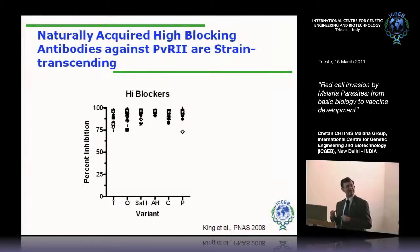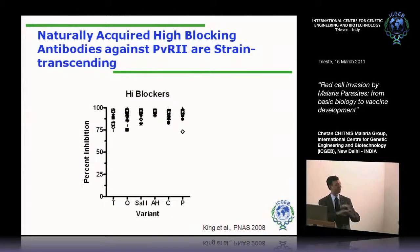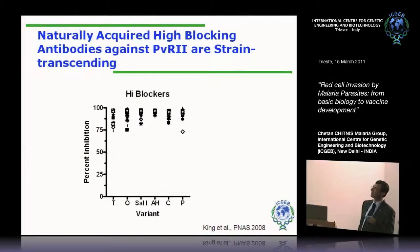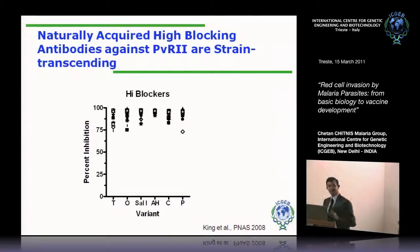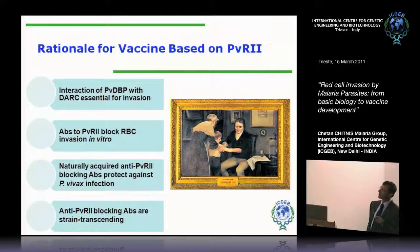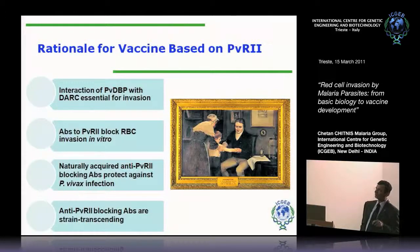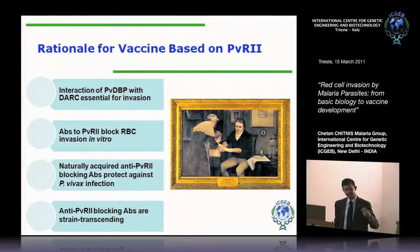Even when infected, children with high blocking antibodies have lower geometric mean parasitemia than intermediate or low blockers, and no effect against falciparum — a nice control. So having high blocking antibodies protects against vivax infection. The other prediction we made is that if you make high blocking antibodies, they should be strain-transcending. We tested binding inhibition of the high blockers against six variants of vivax region 2, accounting for about 90% of the polymorphism seen in Papua New Guinea, and they block all of them equally well.